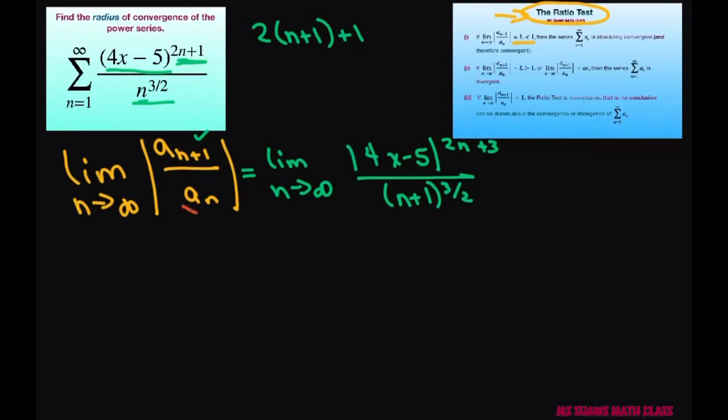Now we're dividing by a sub n, which is the same as multiplying by the reciprocal. So that's going to be times n to the power of 3 halves divided by 4x minus 5 to the 2n plus 1.